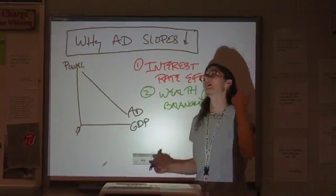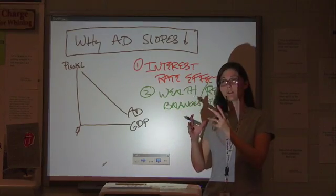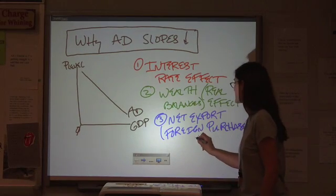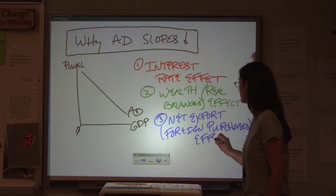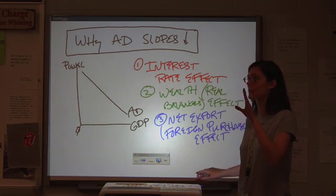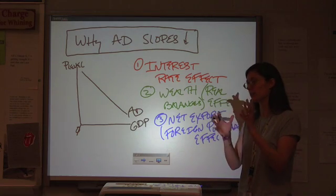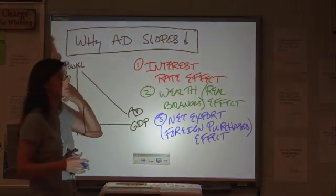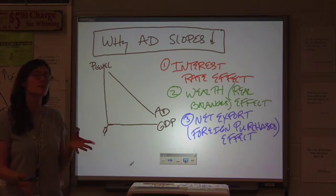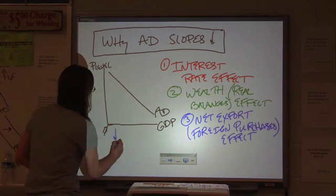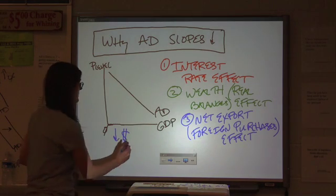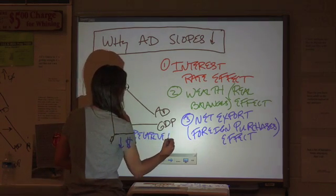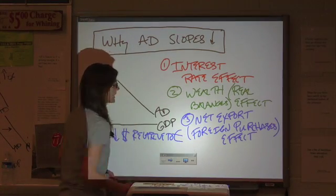Now, the third one gets us into some international trade issues. Net export or foreign purchases effect. Now, here's how this one works. Again, talking about the relative value of the dollar compared to some other foreign currency. Let's say, for example, that the value of the dollar depreciates relative to the euro. We're looking at in class today.